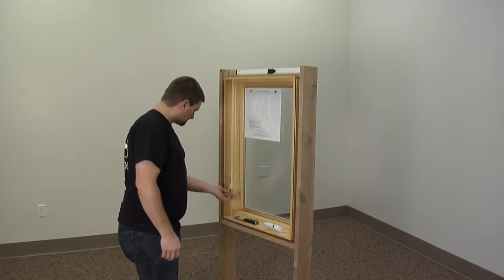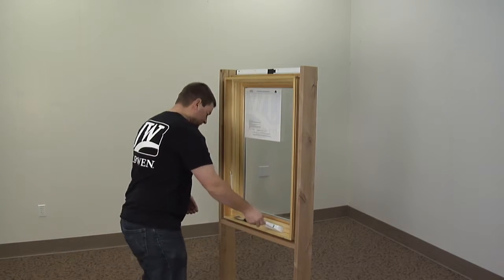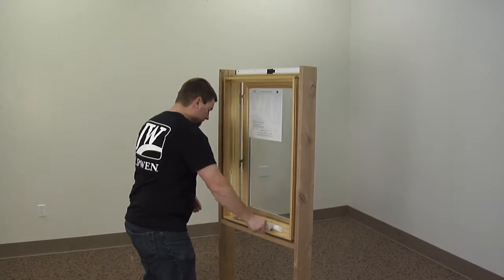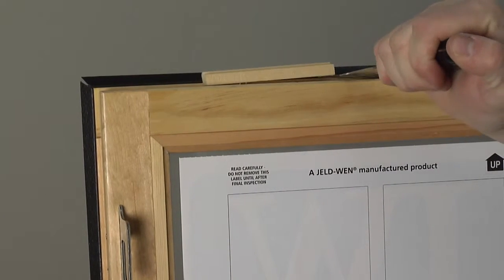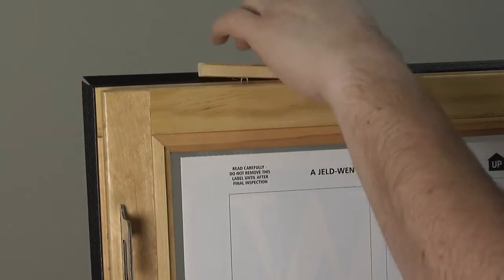First, unlock and open the window at least halfway and locate the shipping block on the top of the sash. Using a putty knife, gently pry one end of the shipping block. Remove the staple if necessary.